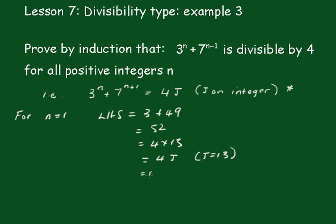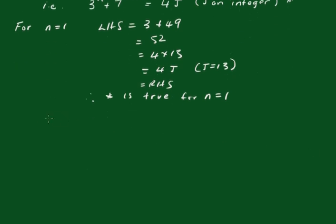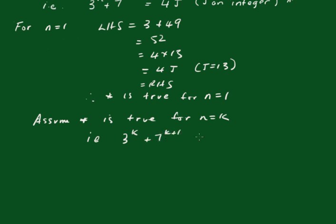Which equals the right hand side. Therefore, the statement is true for n equals 1. Now, we'll assume the statement is true for n equals k. That is, 3 to the k plus 7 to the k plus 1 is equal to 4j dash, some other integer. That is our assumption statement.